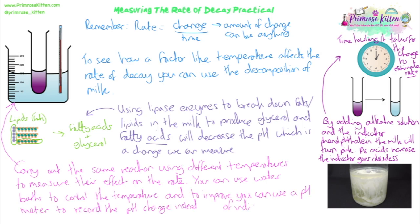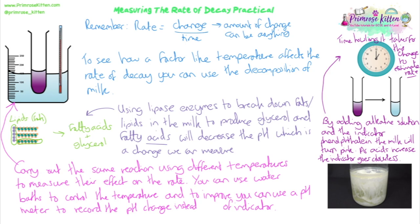All of these are improvements to the method, or things that would make it more accurate — maintaining the temperature with a water bath and keeping it constant, and then using a pH meter to get quantitative data rather than qualitative data.